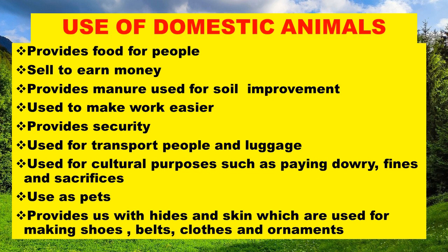Domestic animals have different uses. They provide food for people. We can sell them to earn money. They provide manure used for soil improvement and are used to make work easier — for example, for carrying people, carrying goods or luggage. They provide security and are used for transport to carry people and luggage. They are also used for cultural purposes such as paying dowry, fines, and sacrifice.